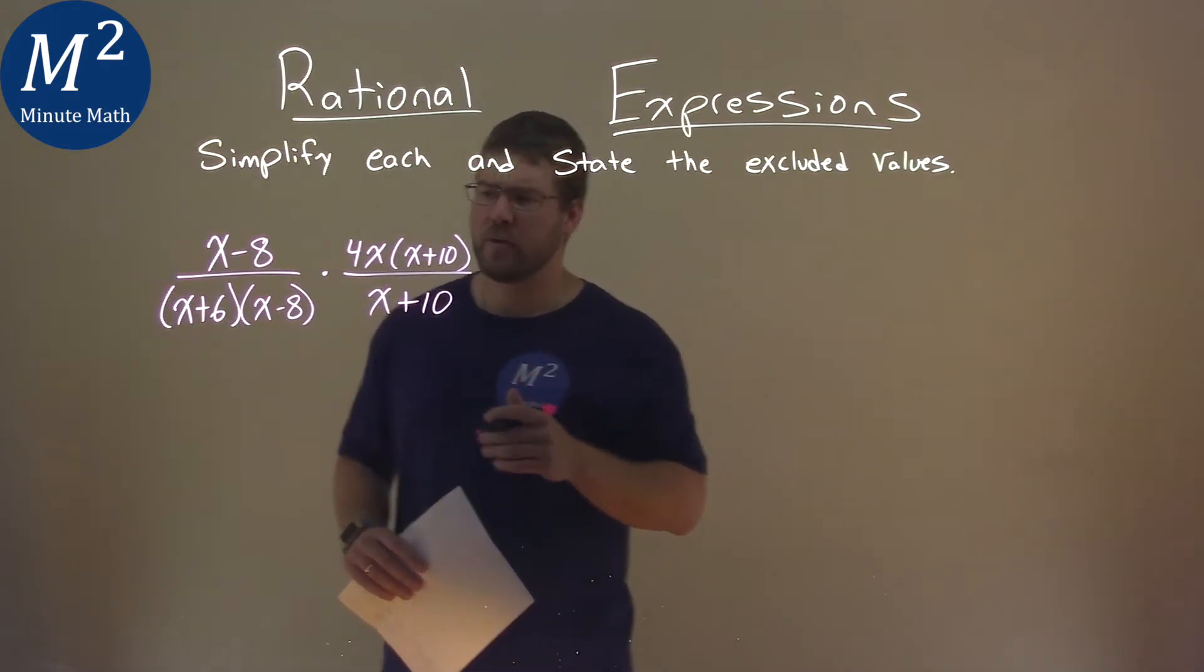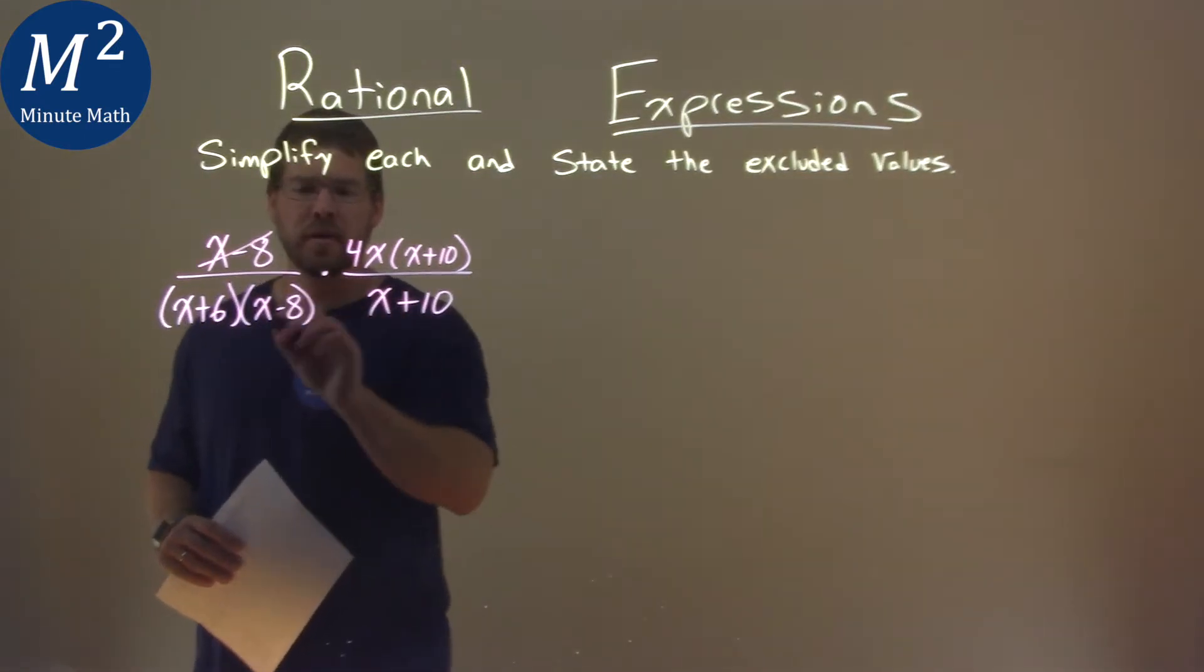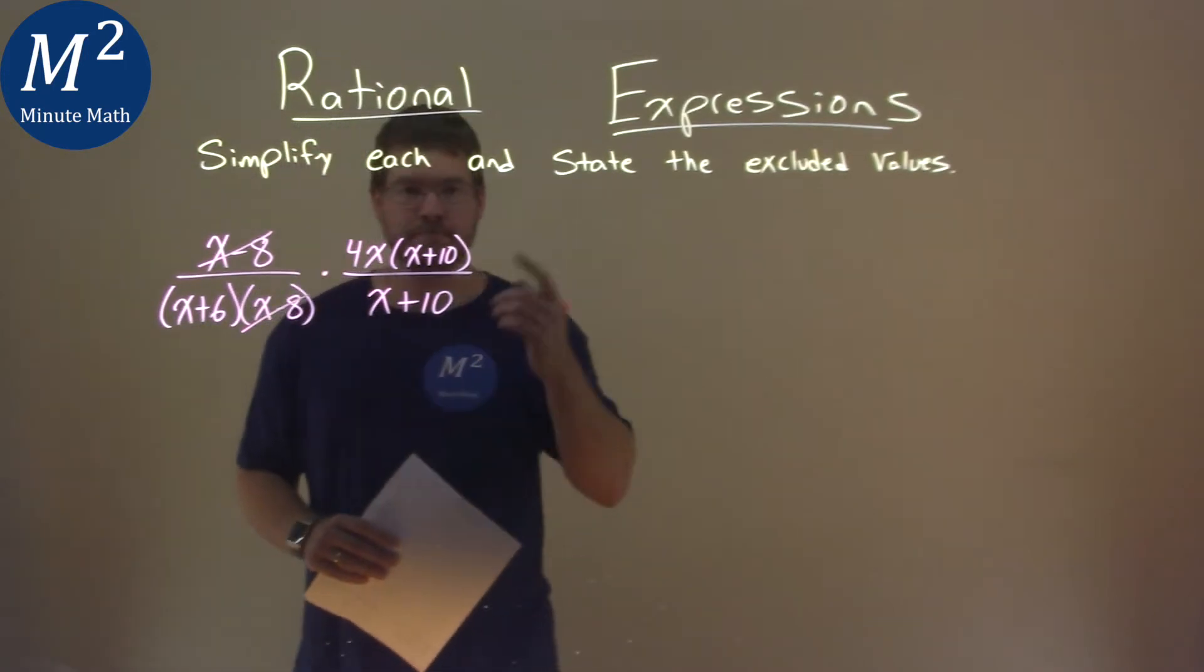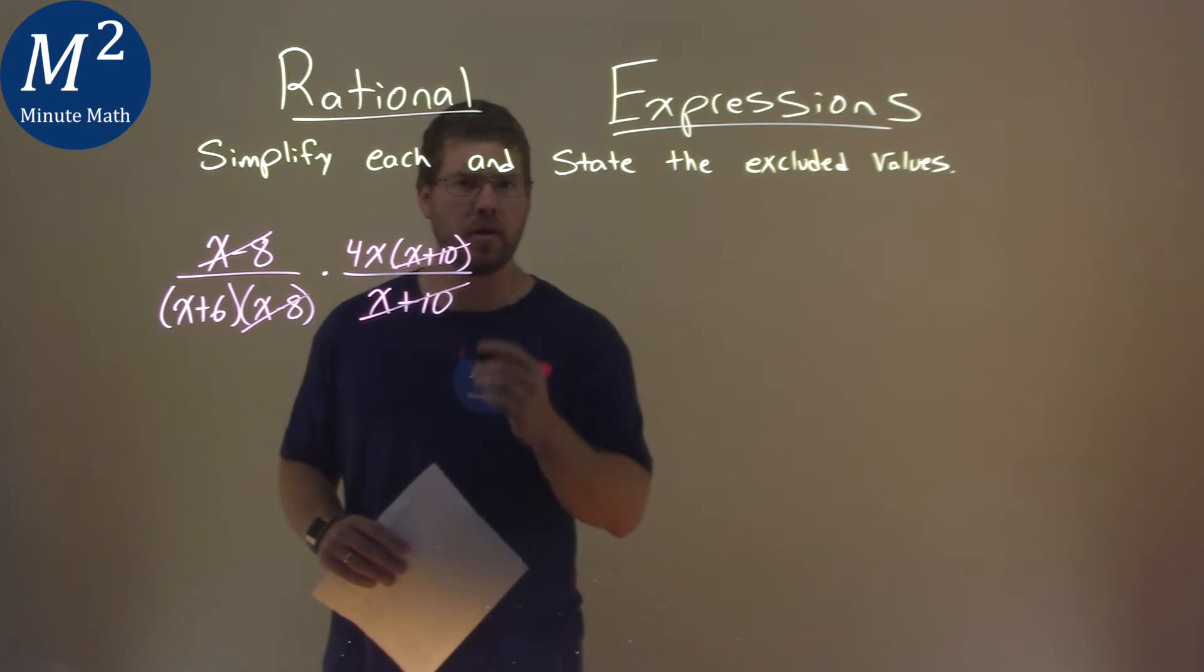Well first thing I try to do is eliminate where I can, a quick cross out. x minus 8 in the numerator, x minus 8 in the denominator cancels. The x plus 10 here and x plus 10 also cancels.